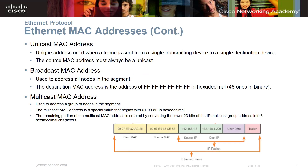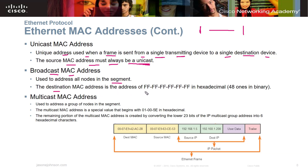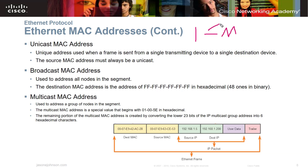Let's talk about unicast, broadcast, and multicast. A unicast address is used when a frame is sent from a single transmitting device to a single destination device — one-to-one. The source MAC address must always be a unicast. A broadcast MAC address is used to address all nodes in the segment. The destination MAC address is FF-FF-FF-FF-FF-FF, which is 48 ones in binary — one-to-all, sending to everything on the network.